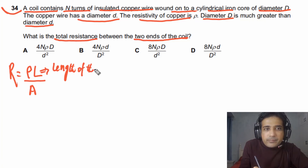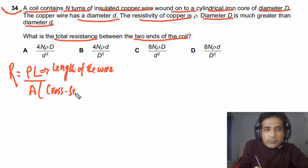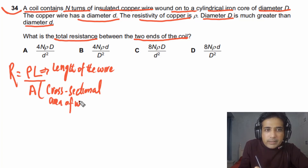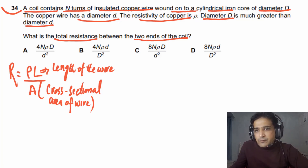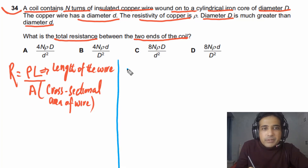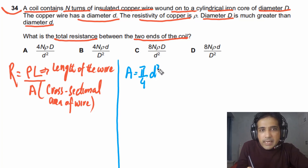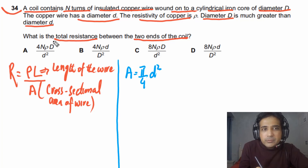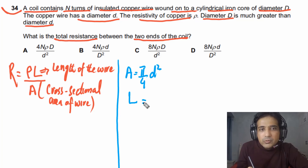The cross-sectional area A of the wire equals (π/4) × d², using the diameter of the wire. We use diameter here because the answer is expressed in terms of d and capital D. Now the more challenging part is calculating the total length L of the wire.